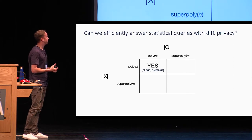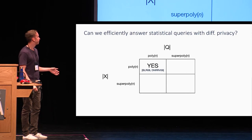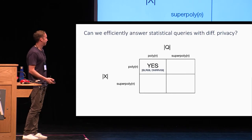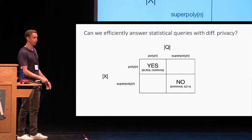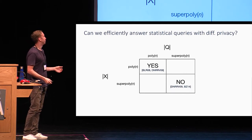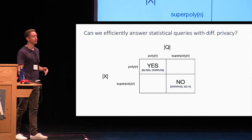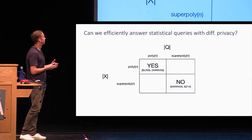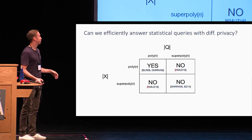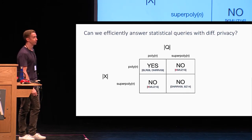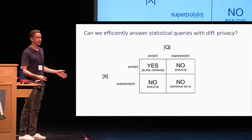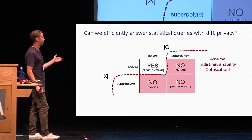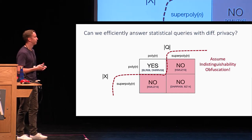How hard this is depends on how large the query set and data universe are. Blum et al. and Dwork et al. show that if both sets are polynomially large in the size of the database, it is possible to answer statistical queries with differential privacy efficiently. The traitor tracing scheme of Boneh-Zhandry combined with the Dwork et al. lower bound shows there exists a query set and data universe that is super-polynomially large in the data set size for which this task is impossible efficiently. In 2016 we showed it's sufficient for either of the two sets to be super-polynomially large to show impossibility. However, all these lower bounds assume indistinguishability obfuscation, and we'd like to get rid of that.